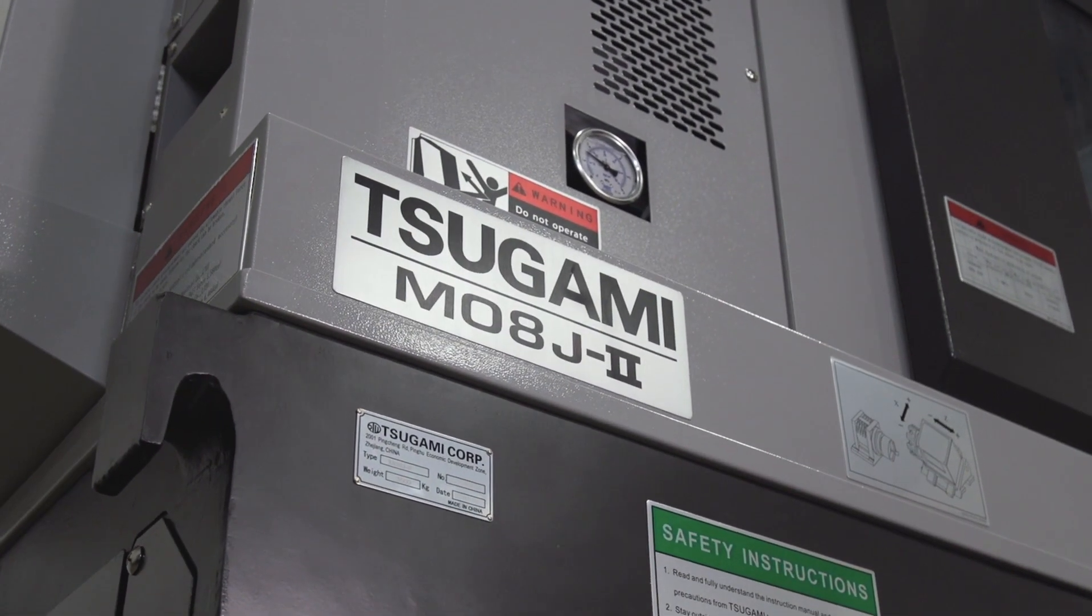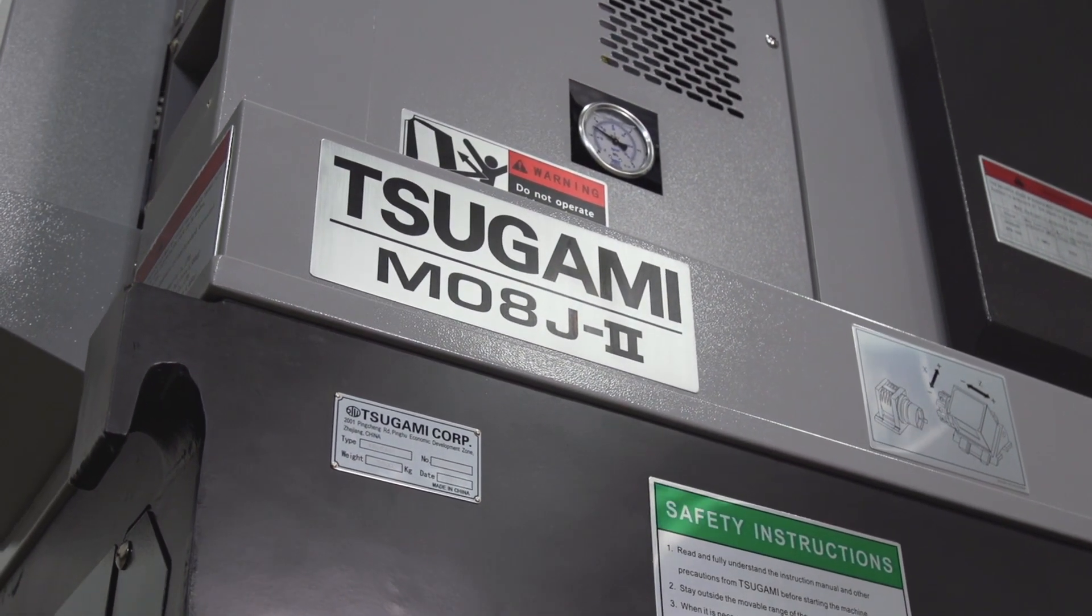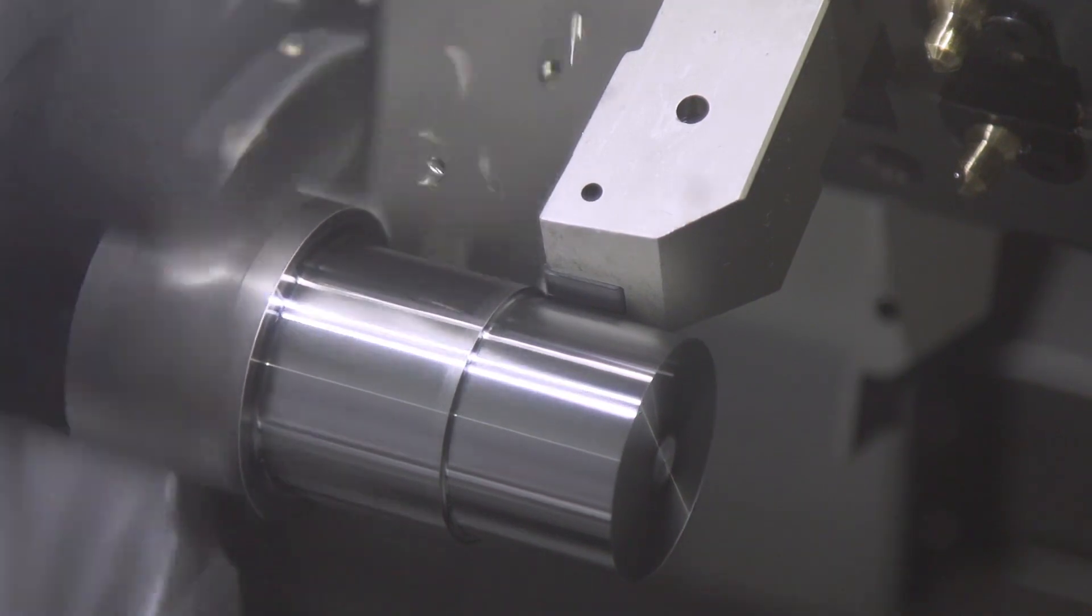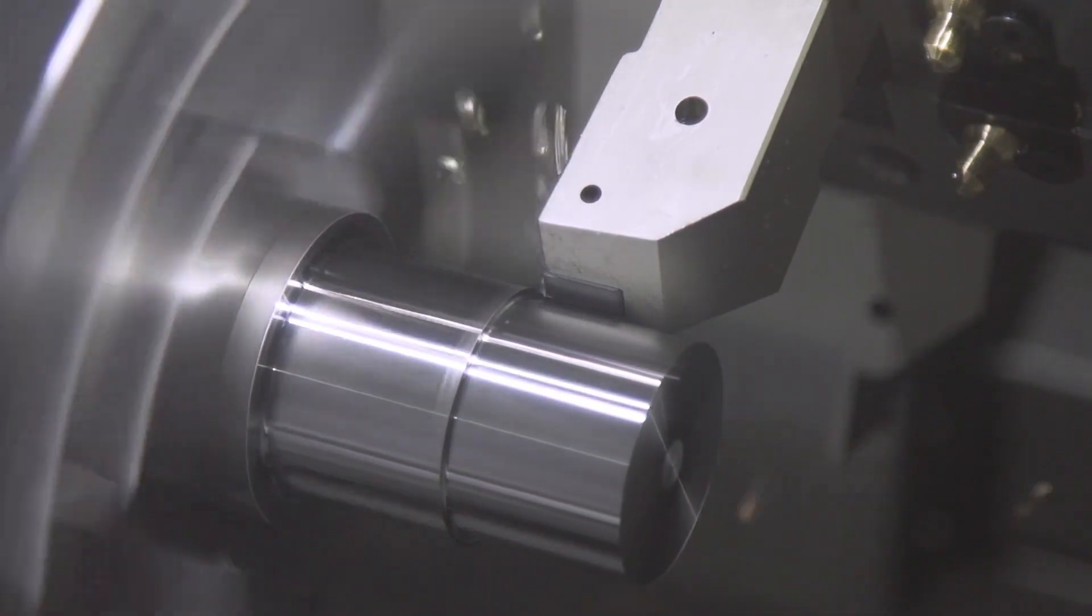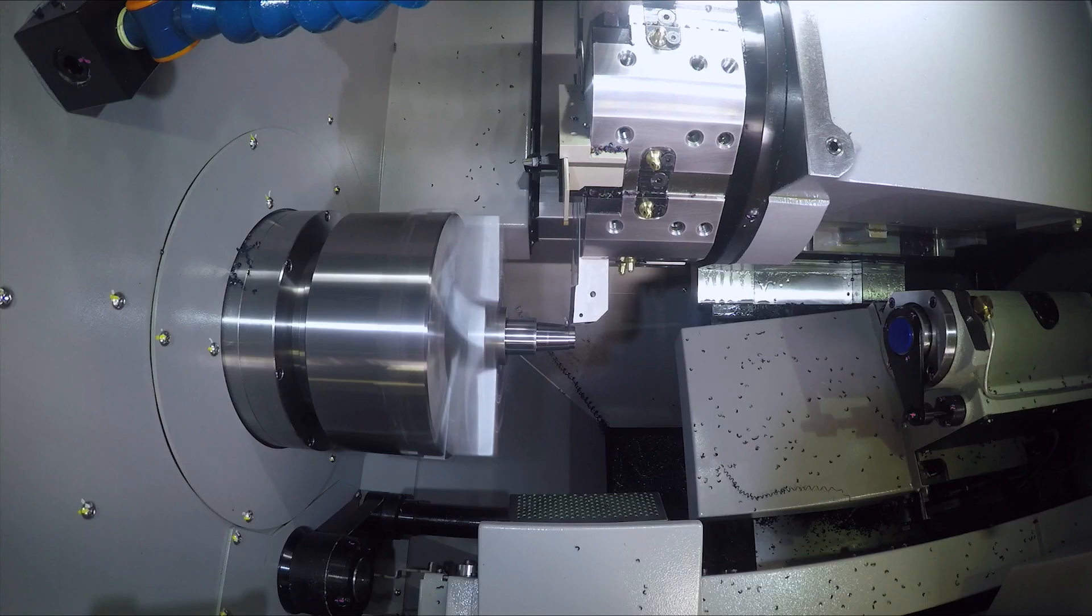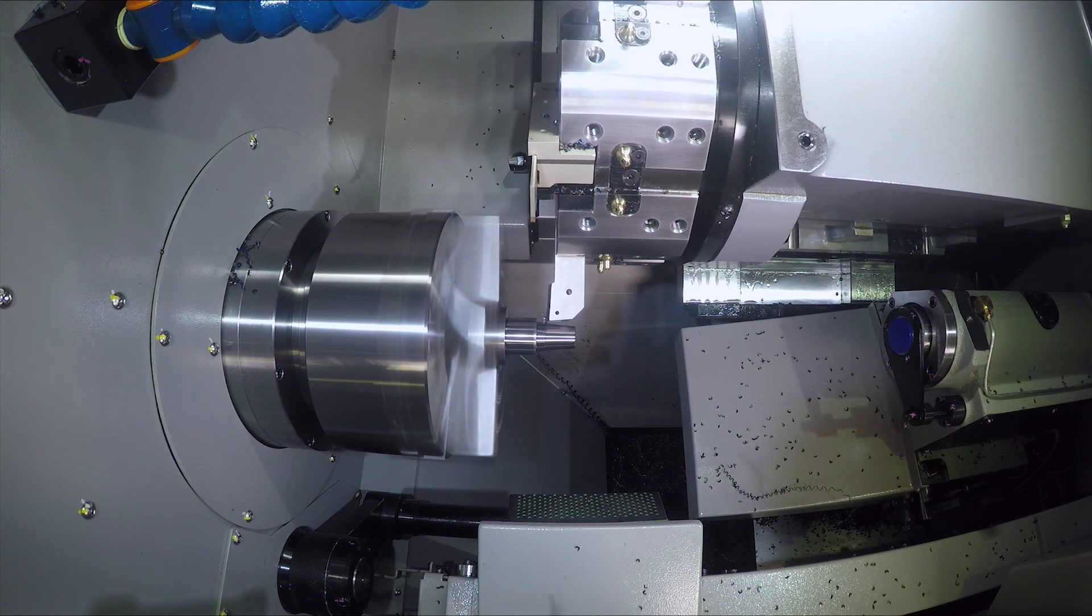The M08J from Tsugami REM Sales is part of our universal line of products. This compact and robust two-axis lathe is the perfect solution for any shop's OP1, OP2, or two-axis CNC lathe parts.